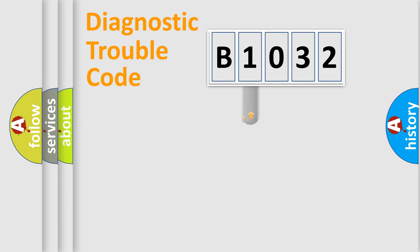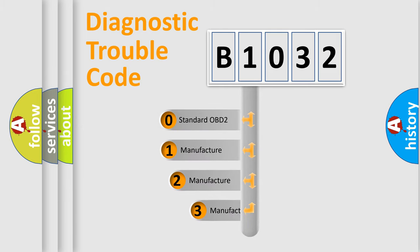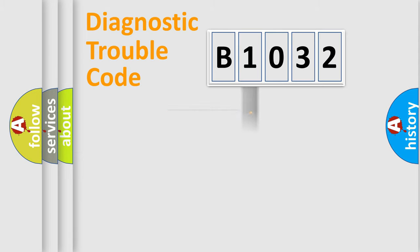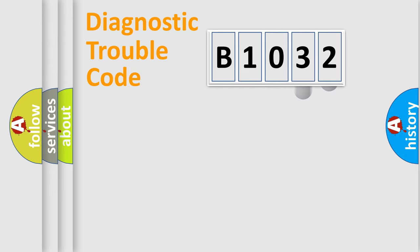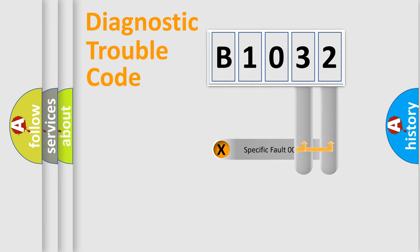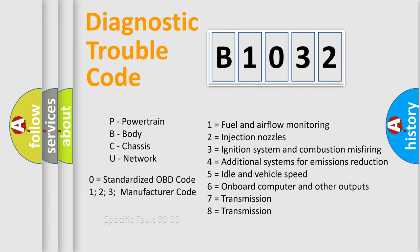This distribution is defined in the first character of the code. If the second character is expressed as zero, it is a standardized error. In the case of numbers 1, 2, or 3, it is a more specific expression of a car-specific error. The third character specifies a subset of errors. This distribution is valid only for the standardized DTC code, and only the last two characters define the specific fault of the group. This division is valid only if the second character code is expressed by the number zero.